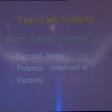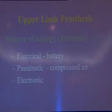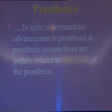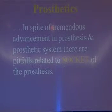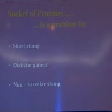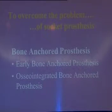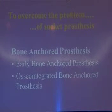Related to upper limb, as Dr. Das told, the sources of energy can be electrical or battery operated, pneumatic, and electronics are being used in myoelectric hands. These are the advancements related to the newer prosthetic system. But in spite of tremendous advancement in prosthesis, there are pitfalls particularly related to the socket of the prosthesis — specifically the socket is a problem for short stump, diabetic patient, and non-vascular stump.